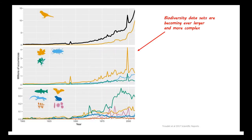At the same time, the data sets used to underpin biodiversity monitoring and conservation planning are becoming ever larger and the statistical methods to analyse them are becoming more complex. It therefore becomes more and more important that software stacks in conservation science are not only correct and efficient but that they are also well-organised and well-documented.